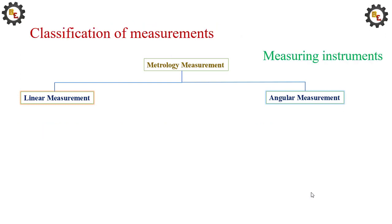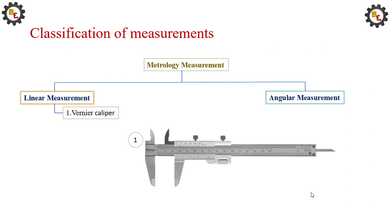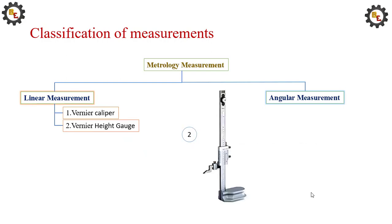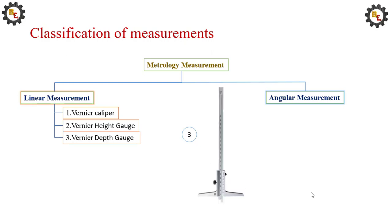Let me see the instruments used for linear and angular measurement. Linear measuring instruments are vernier calipers, used to measure the outside dimensions of an object. Vernier height gauge is used to measure the height of the object, and depth gauge can measure the depth of a hole.